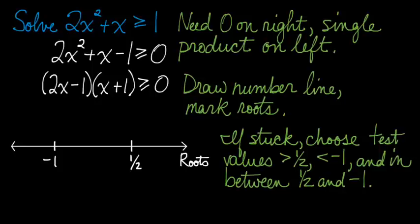I'm going to analyze this without test values, but if you get stuck, all you need to do is just pick test values in between the two roots, greater than the two roots, and less than the two roots. For example, you could choose negative 2, 0, and 1 as your test values and simply plug them into the quadratic.